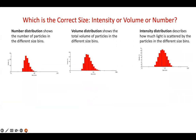The real question is: which is the correct size — intensity, volume, or number? The number distribution shows the number of particles in different size bins. The volume distribution shows the total volume of particles in each size bin. So one is about the total number of particles in a particular size bin, and the other is about the total volume of those particles in that size bin.